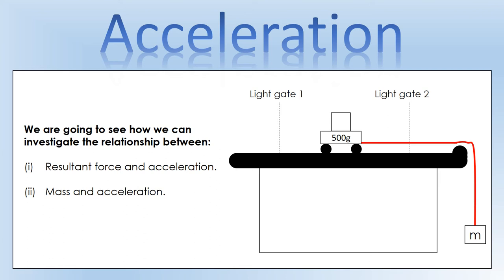In this video we're going to look at how we can investigate the relationship between resultant force and acceleration, and mass and acceleration. We're going to look at what Newton's second law says we should find, and then we'll do an experiment to test how effectively Newton's laws are able to model the system.